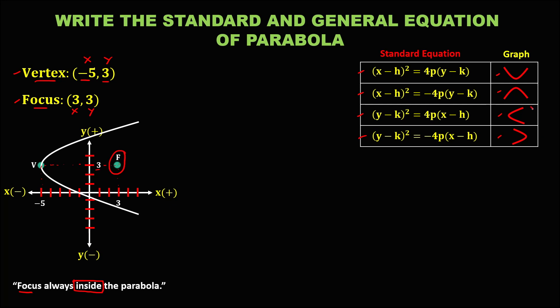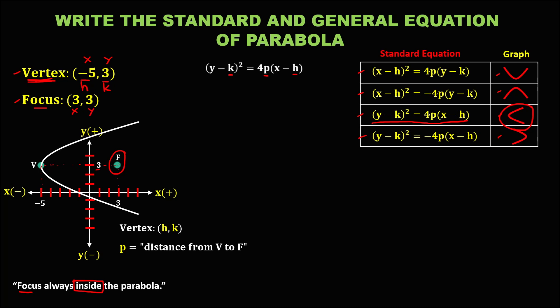Since the parabola opens to the right, this is the formula for the standard equation. To write the standard equation, we need three values: h, k, and p. In the parabola, h and k are at the vertex. Since we have the given vertex, h is negative 5 and k is positive 3. To solve for p, that is the distance from the vertex to the focus.